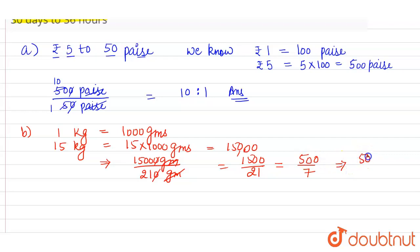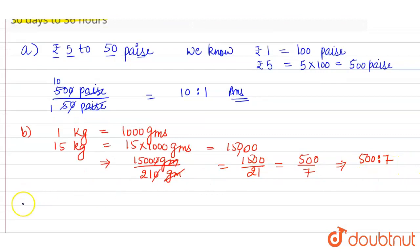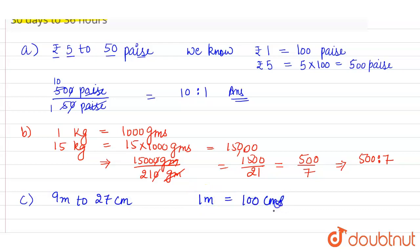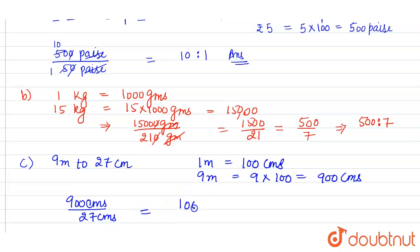The ratio for part (b) is 500 ratio 7. Now for part (c): 9 metres to 27 centimetres. We know 1 metre = 100 centimetres, so 9 metres = 900 centimetres. The ratio is 900 ÷ 27. Since 9 × 1 = 9 and 9 × 3 = 27, the ratio is 100 ratio 3.